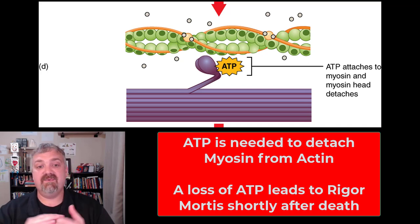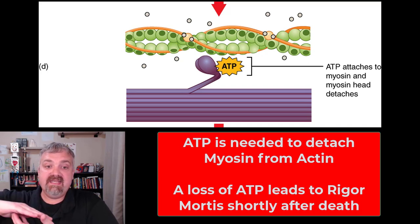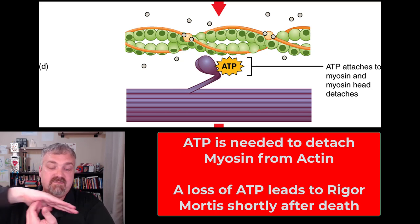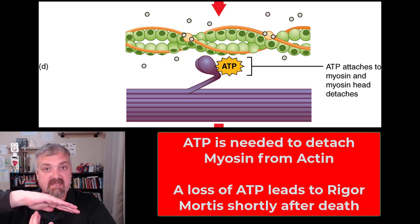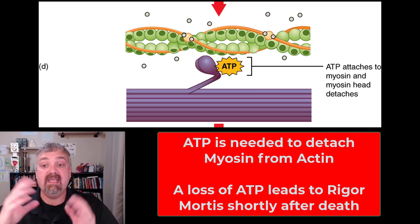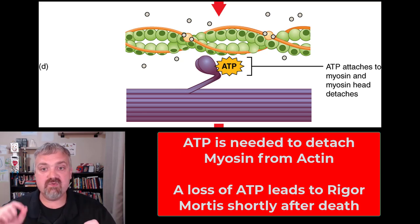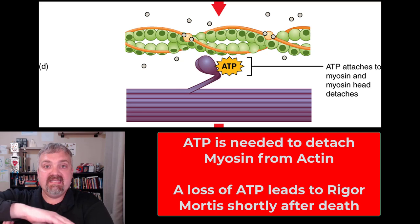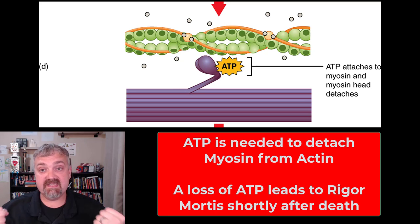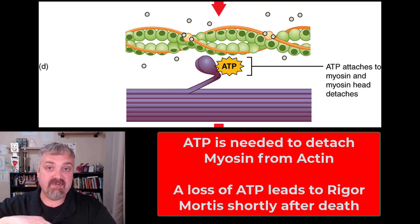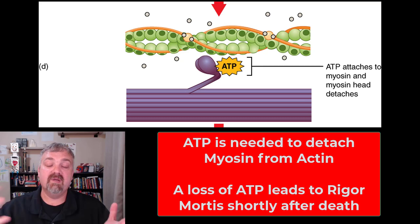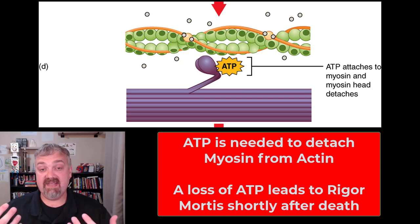A single myosin head can only pull actin so far. After it's pulled as far as it can, it has to detach from actin, re-cock, and grab on again. Critically, myosin cannot detach without ATP — so if you run out of ATP, myosin and actin are stuck together. That's what rigor mortis is: soon after someone dies, the muscles get stiff and rigid because ATP is no longer being produced. We only store a few seconds' worth in the body, so without ATP, actin and myosin are stuck. Rigor mortis goes away as the body starts to break down.